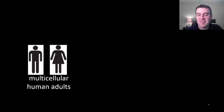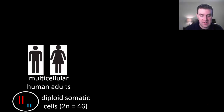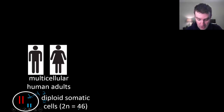We start by thinking about our multicellular bodies. Remember that those bodies are made of somatic cells for the most part that are diploid, which means that they have a double set of chromosomes — they have their pairs. In this picture, I'm just going to draw diploid cells as having four total chromosomes, but we know that humans have 46 total, or 23 pairs.